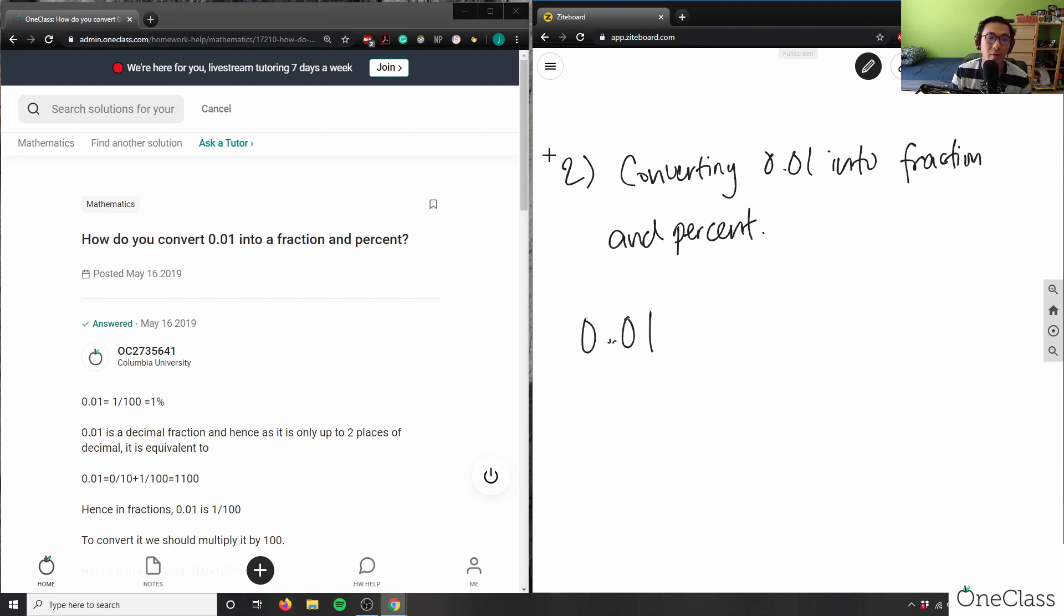So 0.01 is my decimal. If I want to convert it to a percent, I would have to multiply it by 100 percent. So multiply by 100 percent. This decimal was here, one two, so this would go and this would be 1 percent here. So 1 percent would be my percentage.